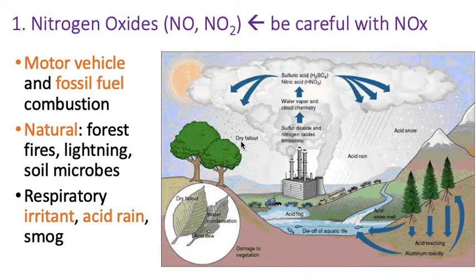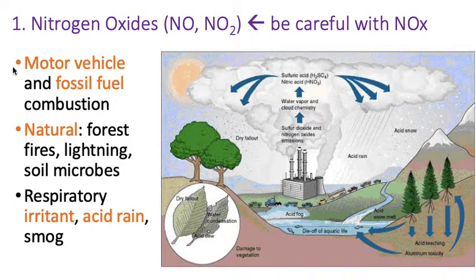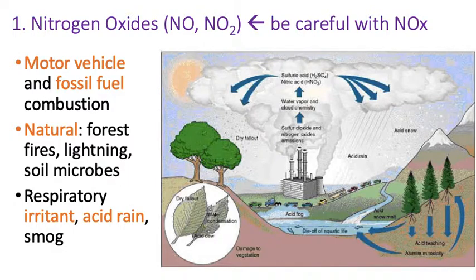Hi, this is Mrs. Bustamante. We're going to continue talking about air pollution. We're going to start going through the six air pollutants that the Clean Air Act talked about and dealt with, the first of which is nitrogen oxides, or NOx.